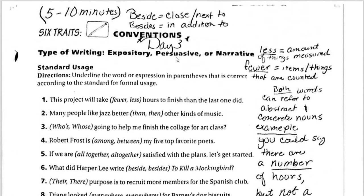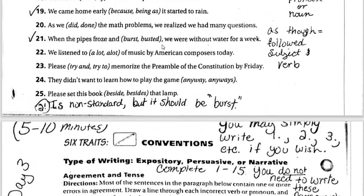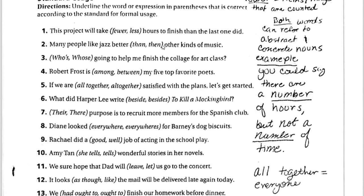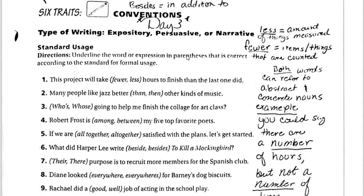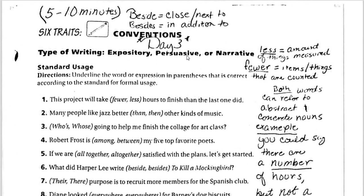Here we are at day three. The page number may have gotten cut off — that's completely my fault. Six Traits standard usage is what we're trying to get to. Not all of these are minor mistakes; some of them are really important, really common, and really obvious.